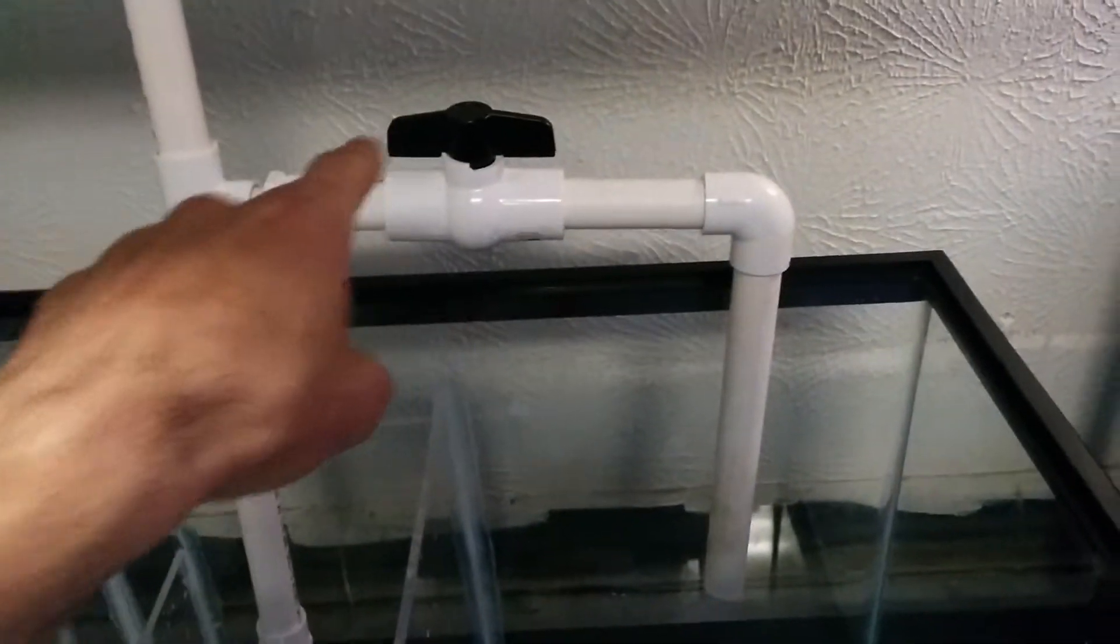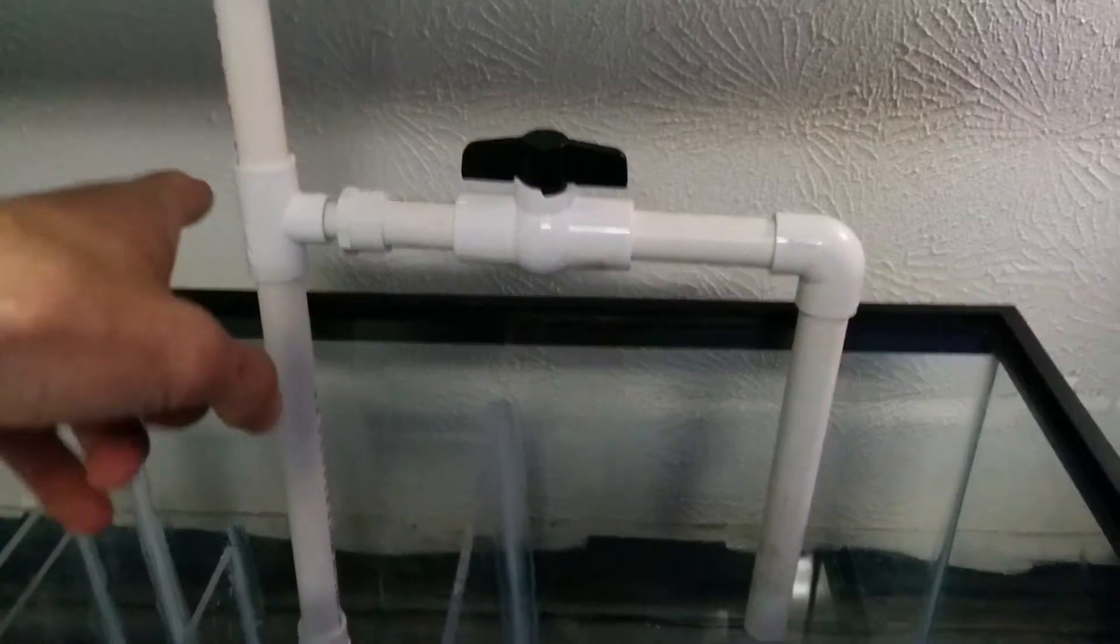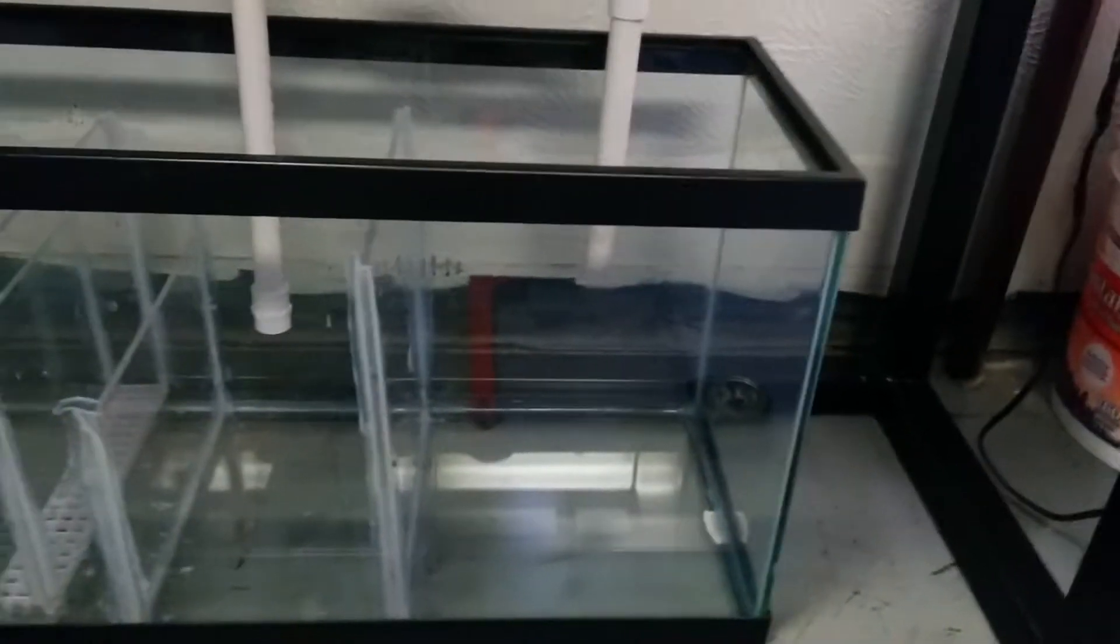So the return pump will be right there, it'll take the water up here and then here's this tee for my refugium. I'll have that cracked open slightly and since I'm using a Mag 5, it's plenty of flow for this tank altogether, let alone with this teed off to get a little flow for the refugium. I'm gonna do a 10 times turnover rate. I don't like the 20 times turnover rate.